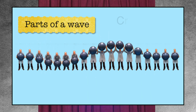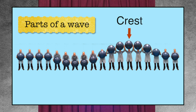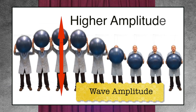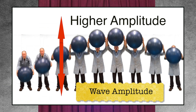Now the highest part of the wave is called the crest of the wave, and the lowest part of the wave is called the trough. Now here's a higher amplitude wave — the crests get much higher and the troughs get much lower.